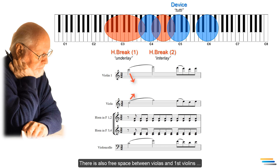There is also free space between violas and first violins, where we can apply the horizontal break method. Let's interlay just close two-part harmony. Of course, three-part harmony also can be used instead of two-part, if more tension is needed between the octave melodies. I'm going to use just two-part harmony.